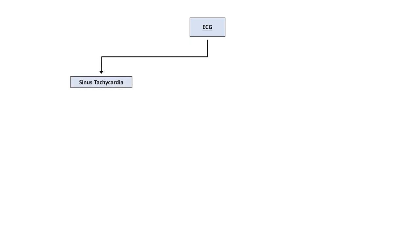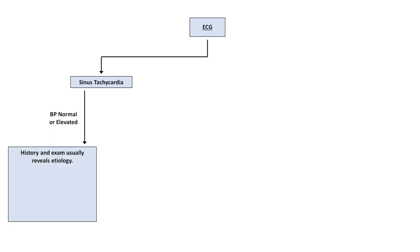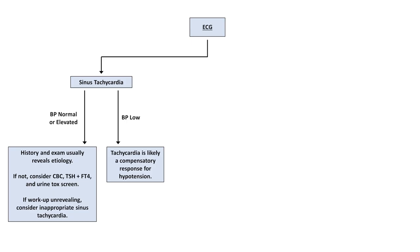When it comes to a diagnostic algorithm, from the information we've gathered up front, particularly from the ECG, patients will fall into one of a few categories. Consider if the ECG shows sinus tach and the blood pressure is currently normal or elevated. In this case, a thorough history and exam will almost always determine an obvious etiology of the sinus tach from the prior list. If it does not, consider checking a CBC to rule out anemia, and if not already done, a TSH and free T4 to rule out hyperthyroidism as well as a urine tox screen. If the ECG shows sinus tach but the blood pressure is low, the tachycardia is likely a compensatory response to the low blood pressure, and the patient should be assessed for etiologies of hypotension, which is a whole other diagnostic algorithm.